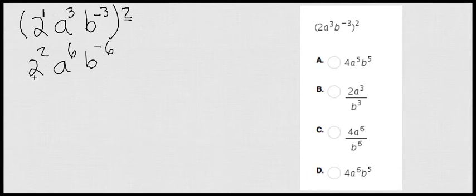Now, I see that I have 2 squared, which is actually 4, a to the 6, and b to the negative 6.